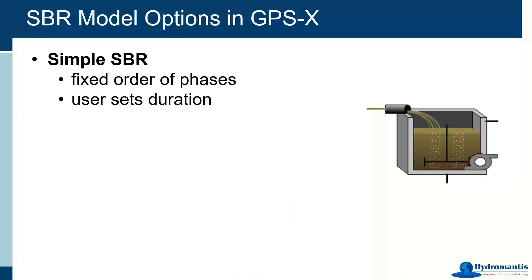Starting with SBR model options in GPSX — we have multiple different SBR unit process objects that can be dragged from the unit process table onto the drawing board. They all look the same but are of different levels of complexity. The more flexibility you need, the more options you need, and therefore more effort to set up. The simple SBR has a fixed order of phases; you just set the duration, and it knows when to aerate, mix, and so on. It's a good one for first-time SBR modeling.